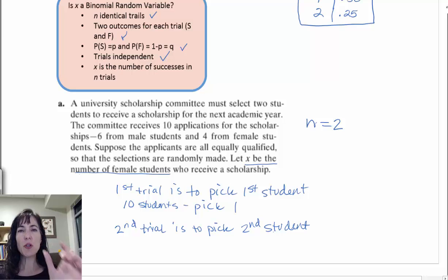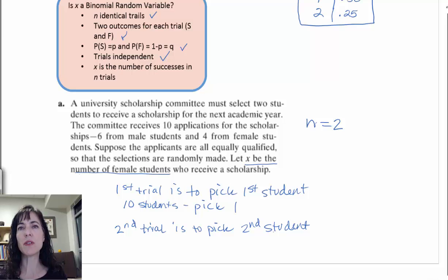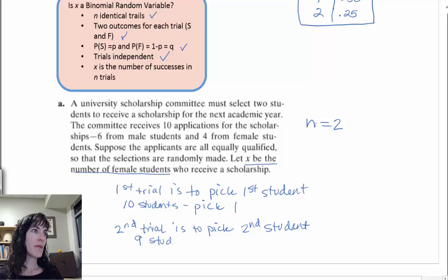But I already chose the first student, so that student is out of the running, because you can't give the same student two scholarships. The goal was to give it to two different students. So now I only have nine students. And from there, I'm going to pick one.